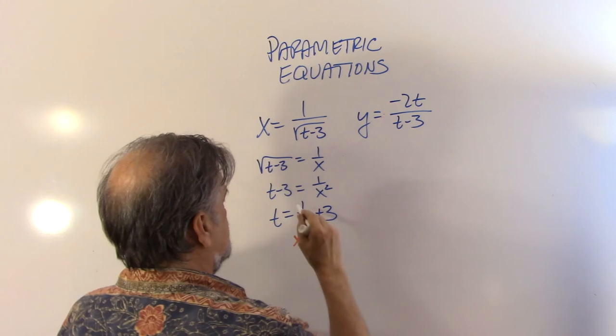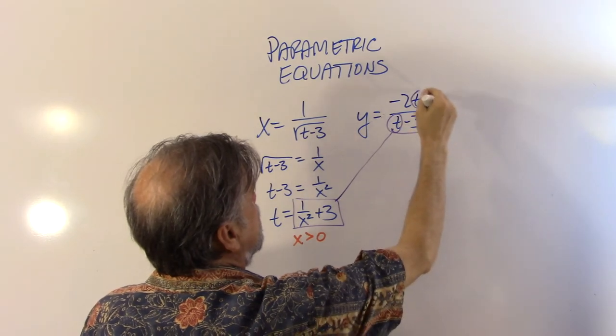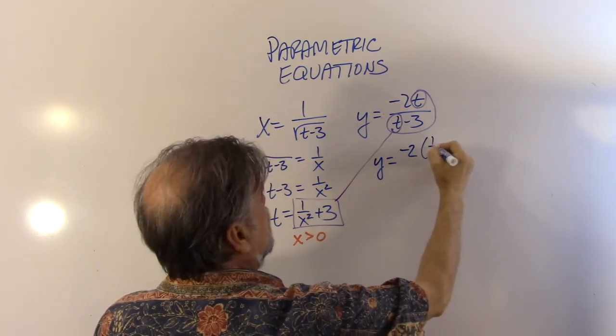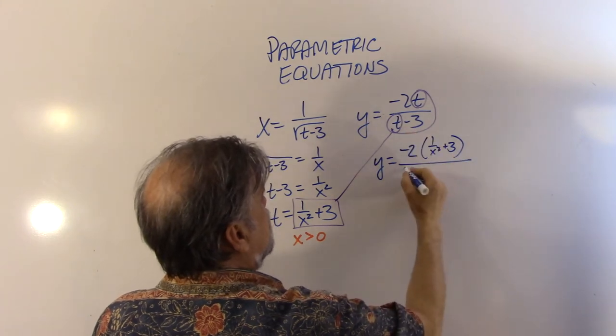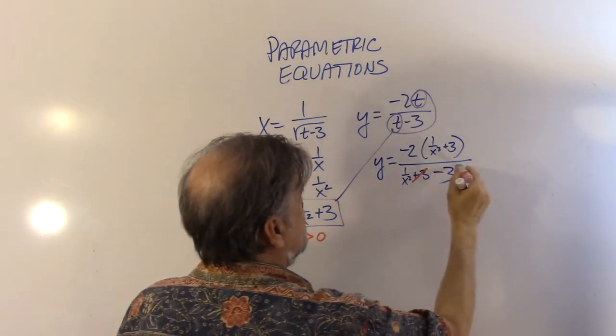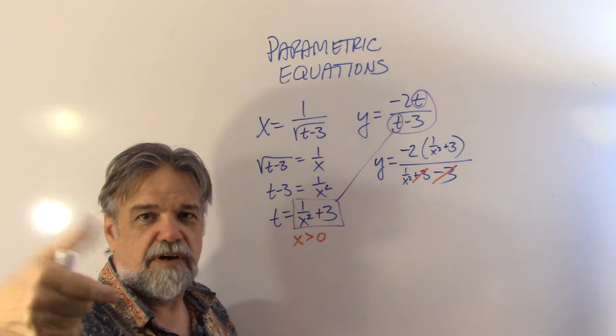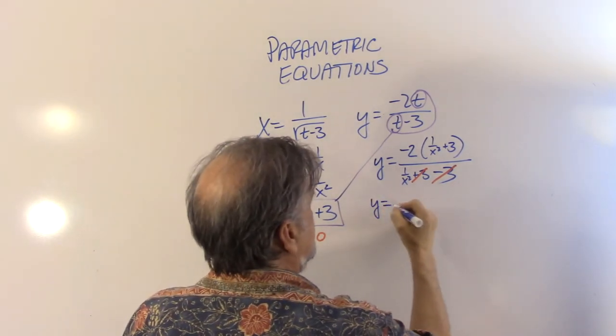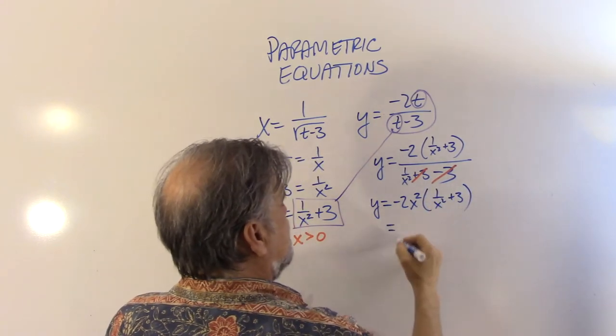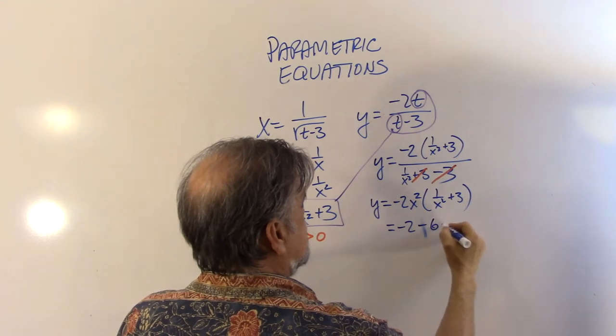So now let's take this equation for t. And I'm going to put it here and here. So y equals negative 2 times (1 over x squared plus 3) over (1 over x squared plus 3 minus 3). Well, I see something I can do real fast. Plus 3 minus 3, get rid of those. And now we're dividing by 1 over x squared, which is the same thing as multiplying by x squared. So this means y equals negative 2x squared times (1 over x squared plus 3). And that's just y equals negative 2 minus 6x squared.